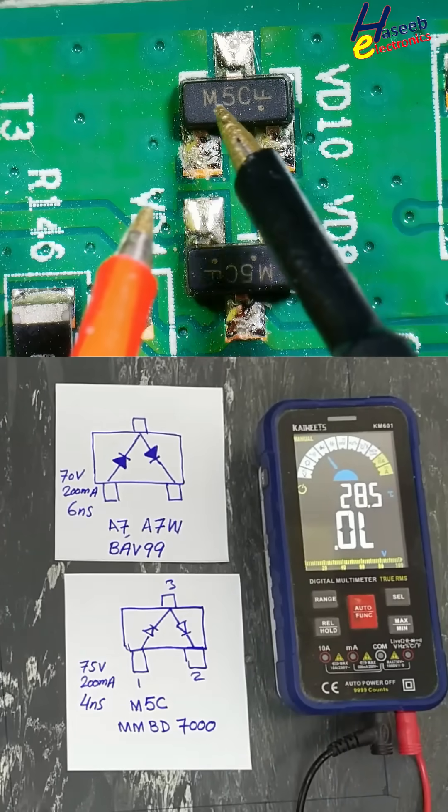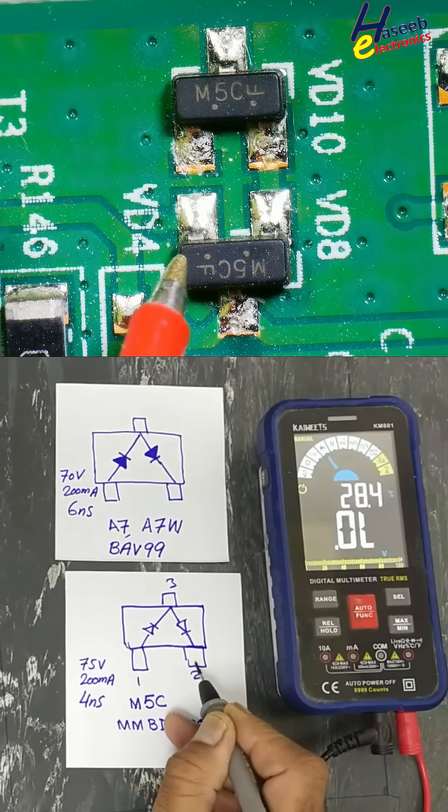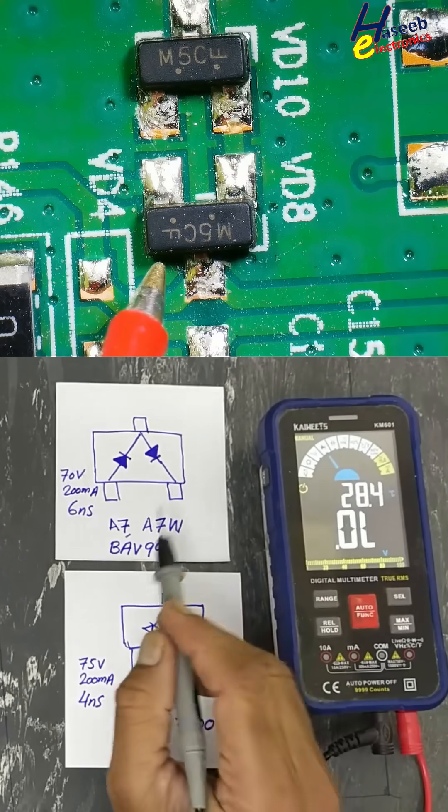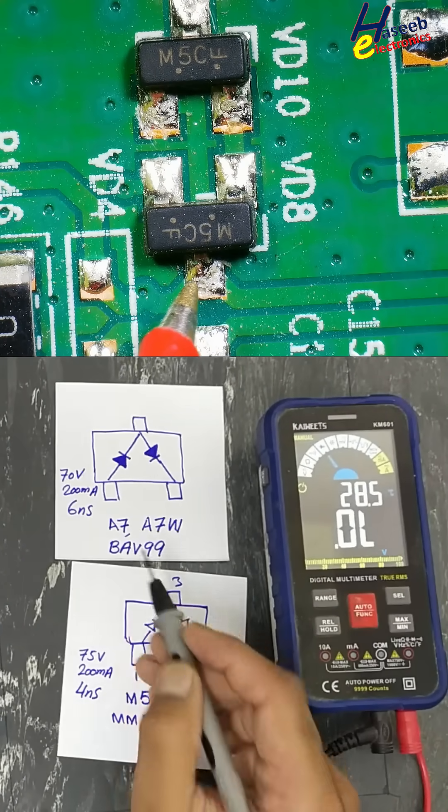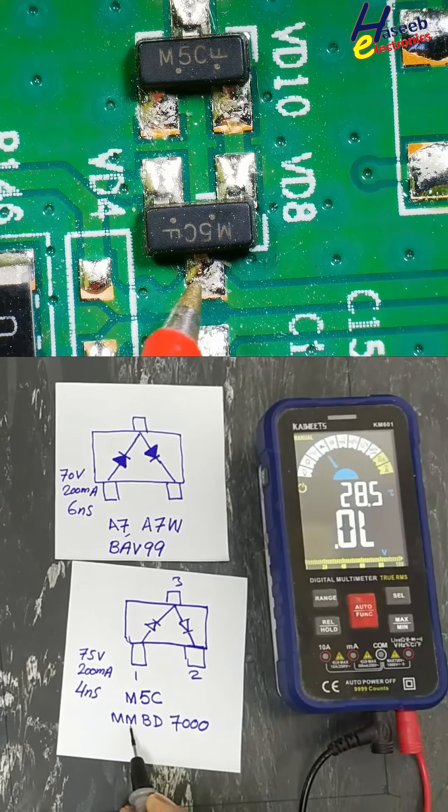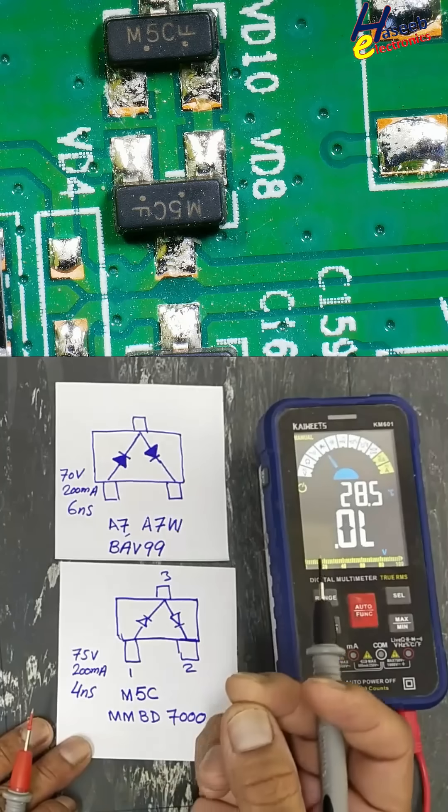This fast recovery diode M5C is a series connected diode, exactly similar to the A7 diode. Its part number is BAV99. The alternative part number is MMBD7000. There's a small difference between them.